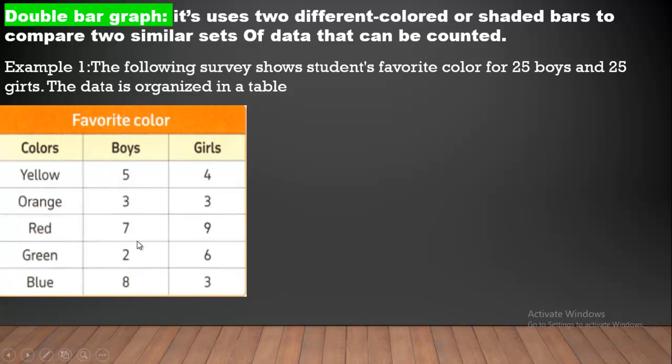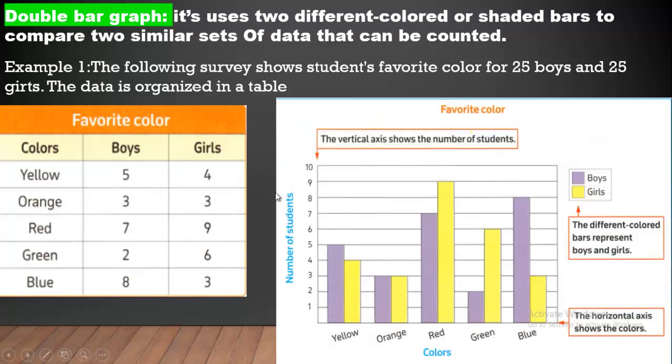Orange 3, 3. Red 7, 9 from boys and girls, and so on. We can represent this data on the double bar graph like this shape. We have boys purple and girls yellow.